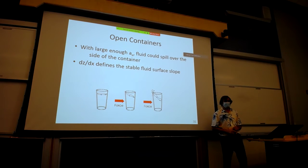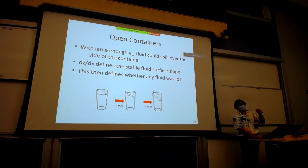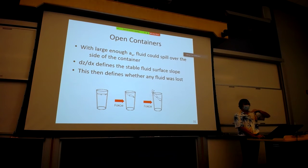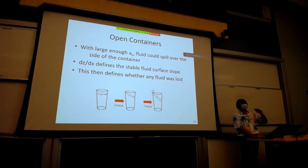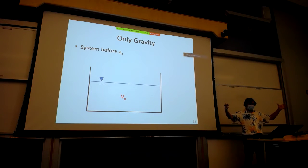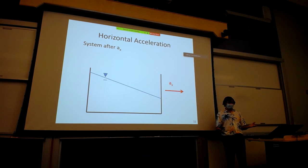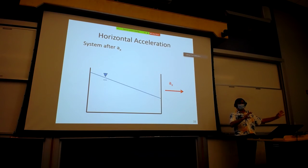The fluid surface slope dz/dx equals minus AX over (g + AZ) defines geometry from which you can determine everything. Before acceleration you have some initial volume — length times width times height for a rectangular system. After acceleration, if accelerating the other way it's just a mirror image. A z-component of acceleration will affect the slope.